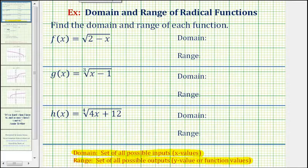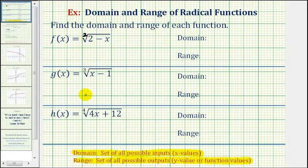Notice f of x is a square root function, so the index is two. g of x is a cube root function, so the index is three. And h of x is a fourth root function, so the index is four. Determining whether the index is odd or even helps us determine the domain and range of the radical function.